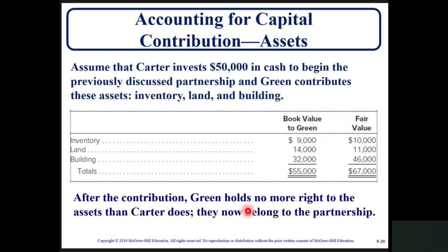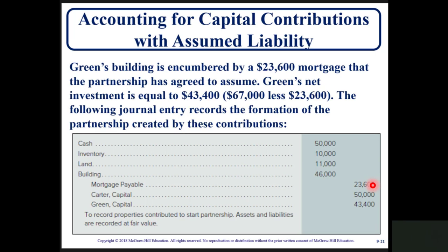Accounting for capital contributions: assume Carter invests $50,000 in cash and Green contributes inventory, land, and building instead of cash. A schedule shows the book value for Green and the fair value of each asset. After the contribution, Green holds no more right to the assets than Carter — they now belong to the partnership. Green's net investment in the partnership is $67,000.